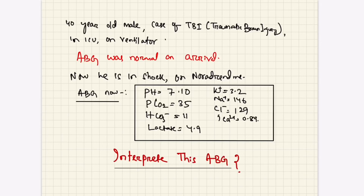Welcome to our discussion today. We have a very interesting ABG to discuss. The patient is a 40-year-old male who had a traumatic brain injury and is now in the ICU on a ventilator. The ABG was normal when he arrived, but now he is in shock and on noradrenaline. The repeated ABG shows: pH 7.10, CO2 35, bicarbonate 11, lactate 4.9, potassium 3.2, sodium 146, chloride 129, and calcium 0.89.